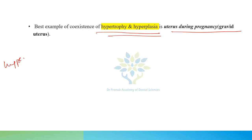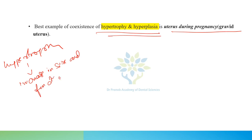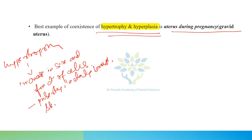The best example of coexistence of hypertrophy and hyperplasia is the uterus during pregnancy. Hypertrophy is the increase in size and function of cells — for example, at puberty in lactating breasts, and in skeletal muscle fibers in bodybuilders.